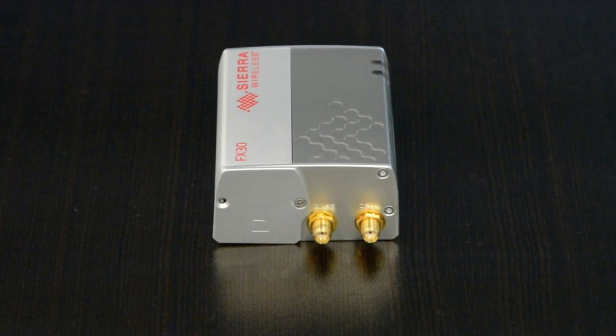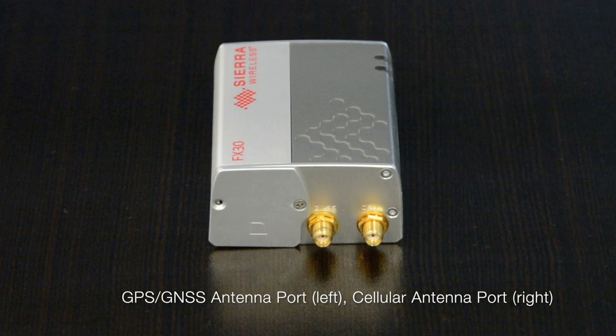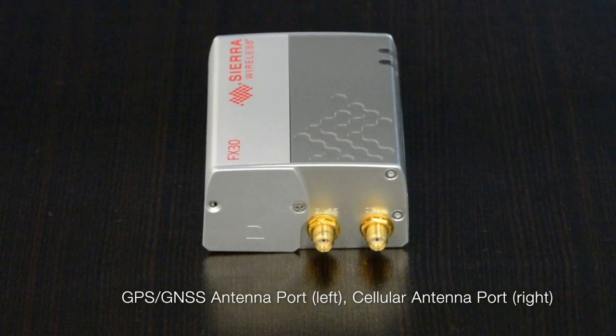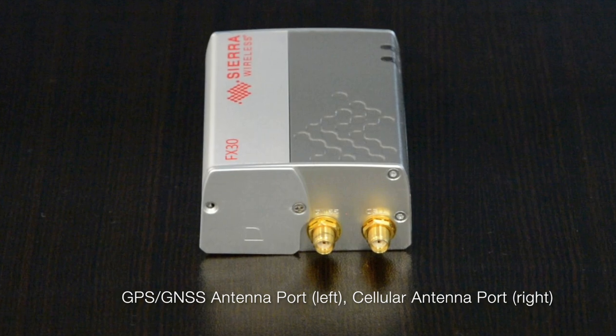On the opposite side of the FX-30, it can be seen that there are two ports where we'll attach our antennas. The leftmost port is for the GPS antenna, while the rightmost port is for the cellular network antenna.